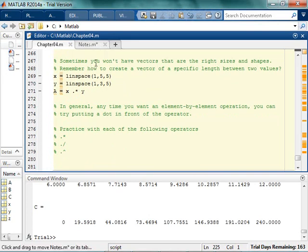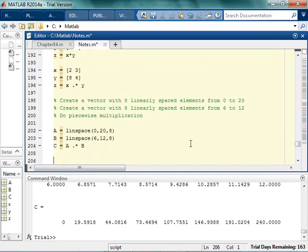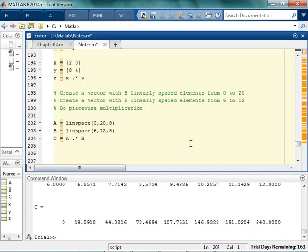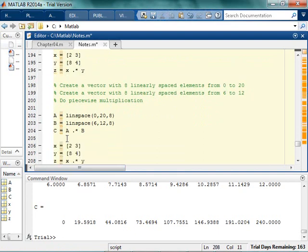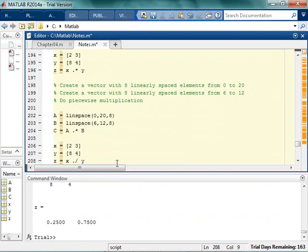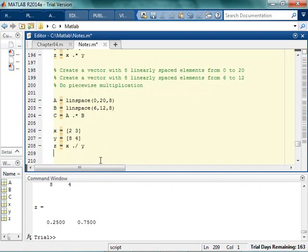We can actually do dot multiply, dot divide, and dot caret. So say for some reason I have these guys here and instead of doing 2 times 8, I want to do 2 divided by 8 and 3 divided by 4. No worries. Bam. One fourth, three fourths. I can also say what if I wanted 2 to the 8th power and 3 to the 4th power? No worries. Done. Not that crazy, just gotta remember to put the stupid dot there.